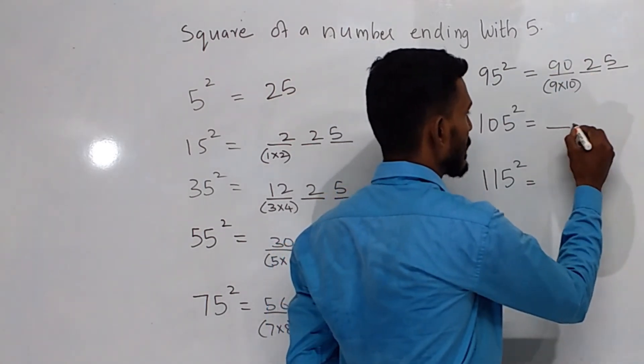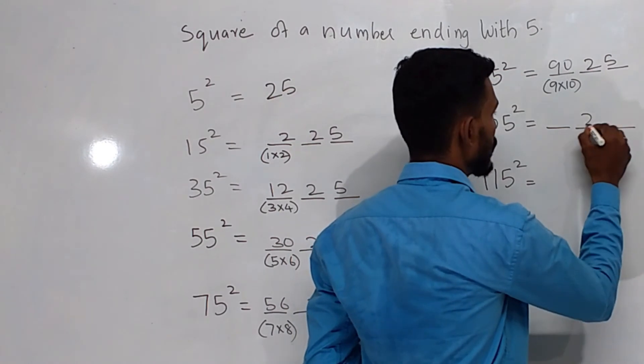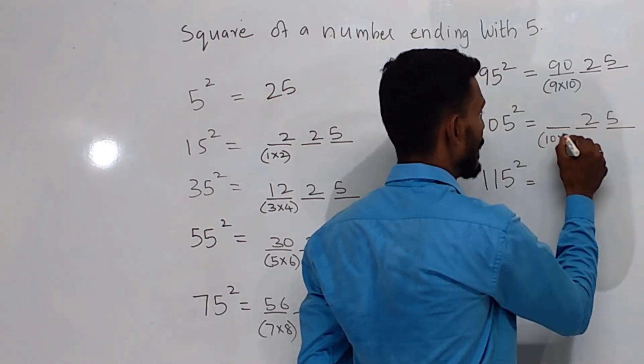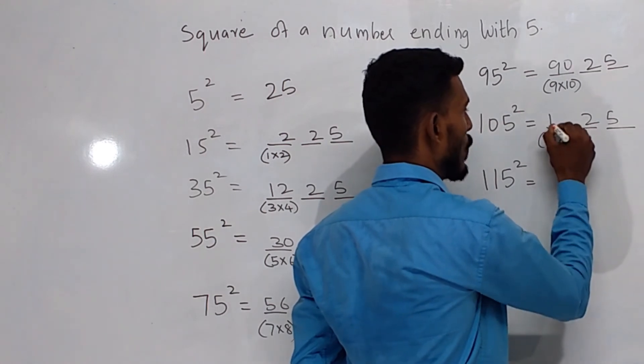Again, the next thing, write 25 here, 10 multiplied by the next number, that is 11, 110.